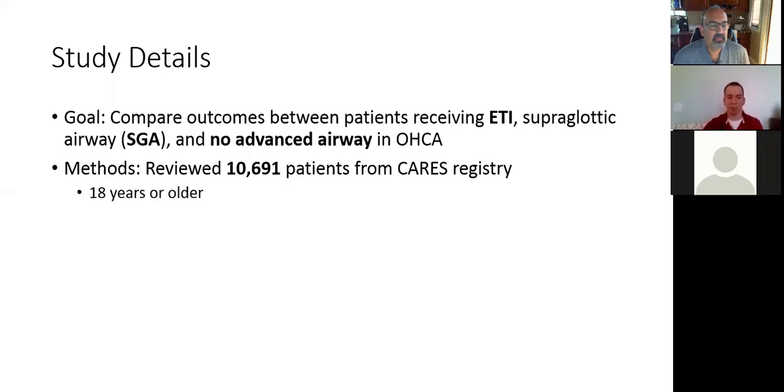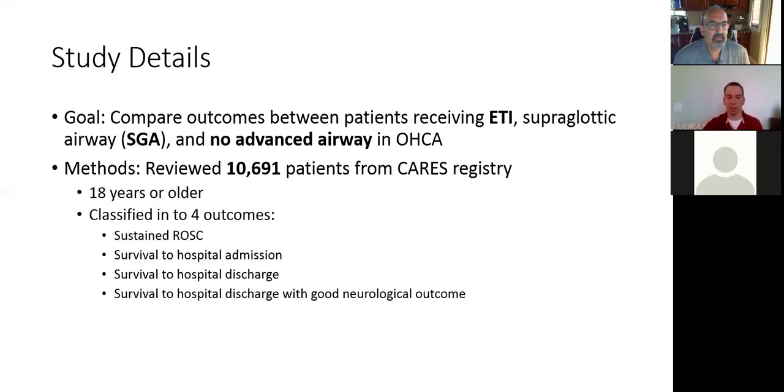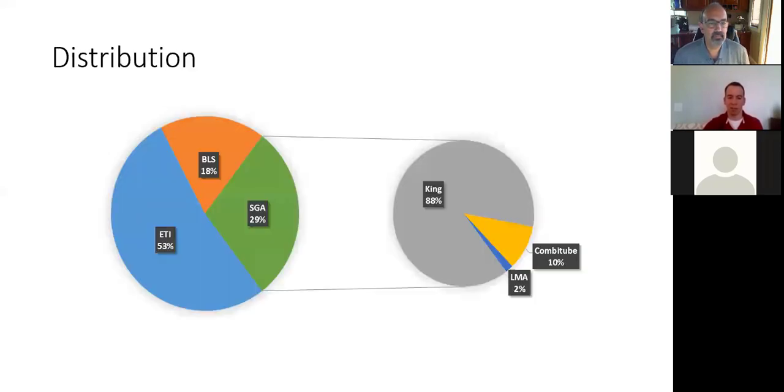There's a little over 10,000 patients they went through. They were all adults. They looked at four outcomes: ROSC, made it to admission, made it to discharge, and they made it to discharge with good neural outcome. The pie chart to the left gives a breakdown of what everybody got. 53% were intubated, 18% got a BVM, 29% got a supraglottic airway. Out of those 29%, 88% were King, 2% LMA, 10% Combitube.